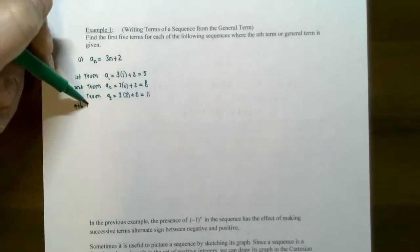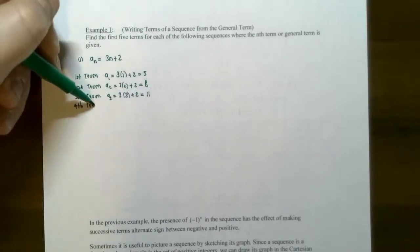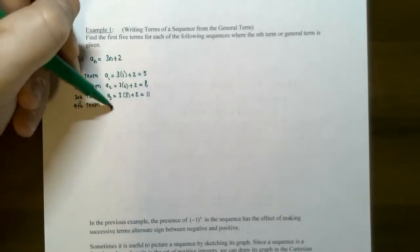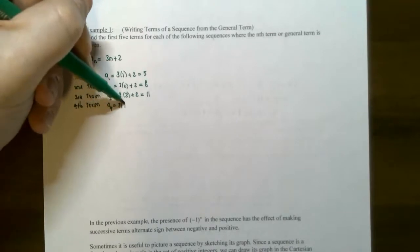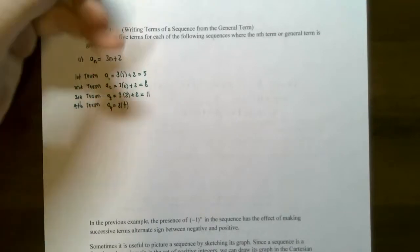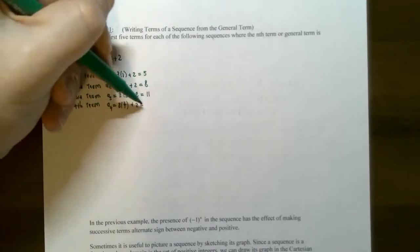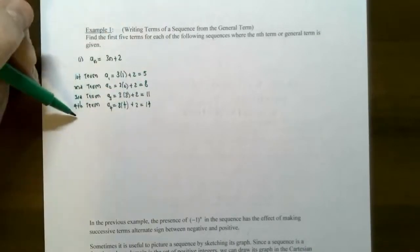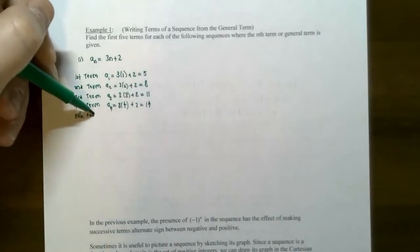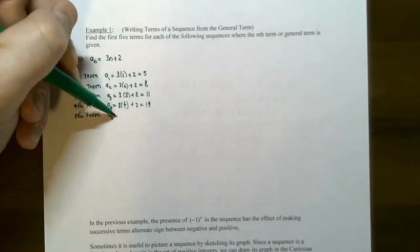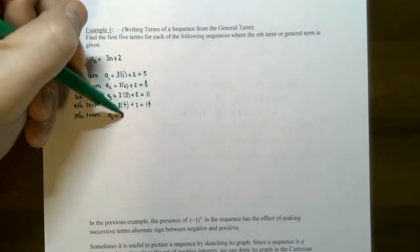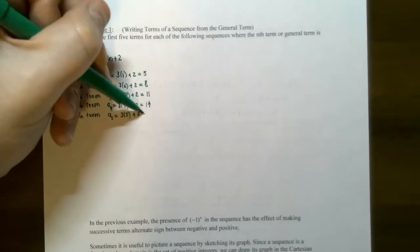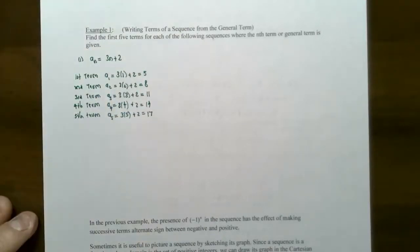The sequence looks like it's increasing by 3 each time. The fourth term is 3(4) + 2 = 14, and the fifth term is 3(5) + 2 = 17. So the first five terms are 5, 8, 11, 14, 17.